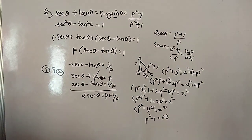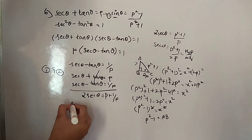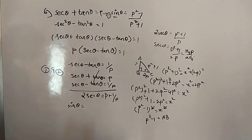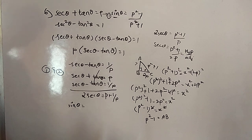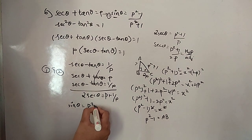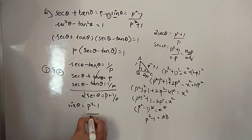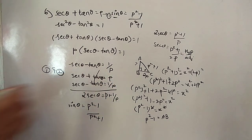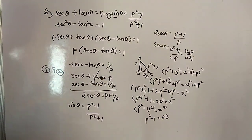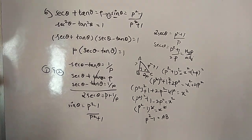Sine theta equals opposite over hypotenuse, which is (p squared minus 1) over (p squared plus 1). Hence it is proved. We will see the seventh question in the next video. Thanks for watching. Do like, share, and subscribe to Vishwa Blooms. Bye.